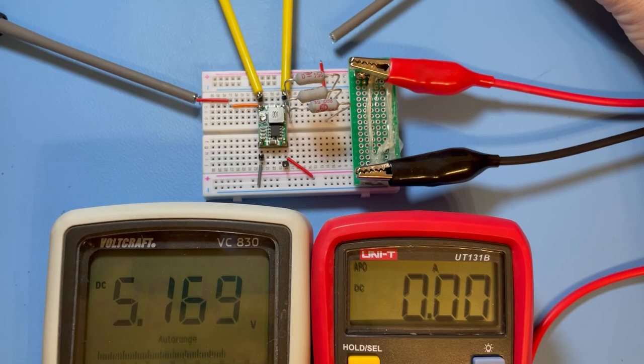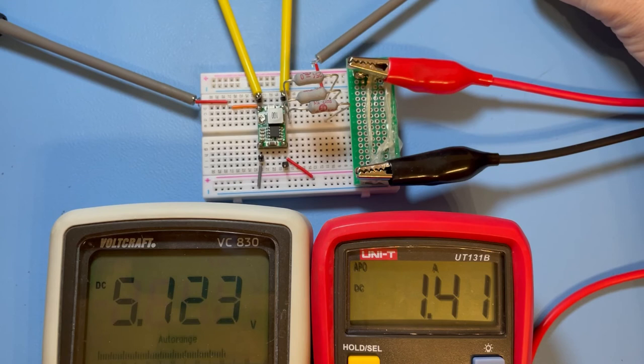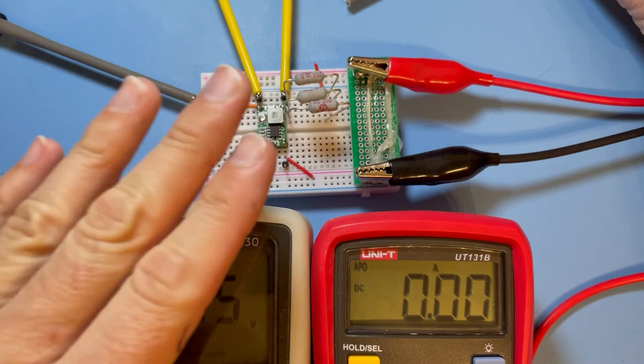Now let's do it and I see 1.4, 1.41. Okay, so let's just disconnect. So the thing is, this Mini 360 can output an ampere or more.